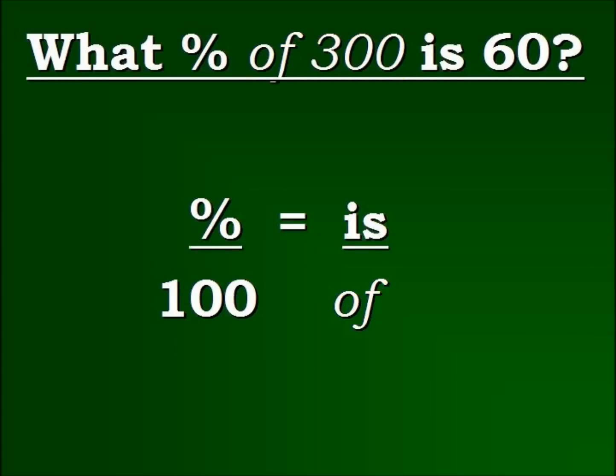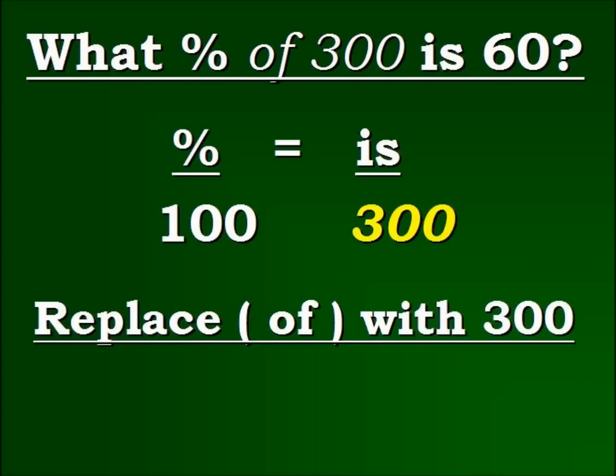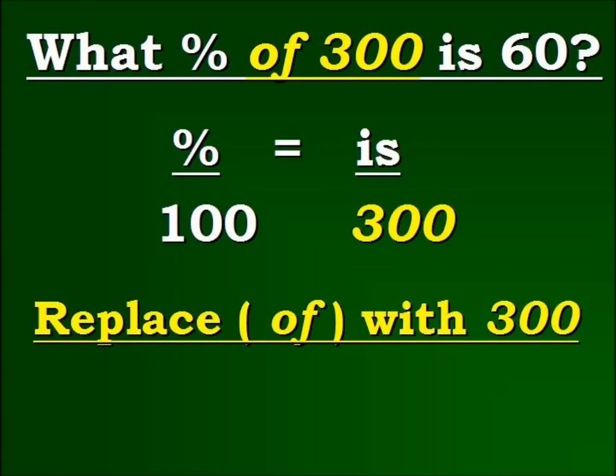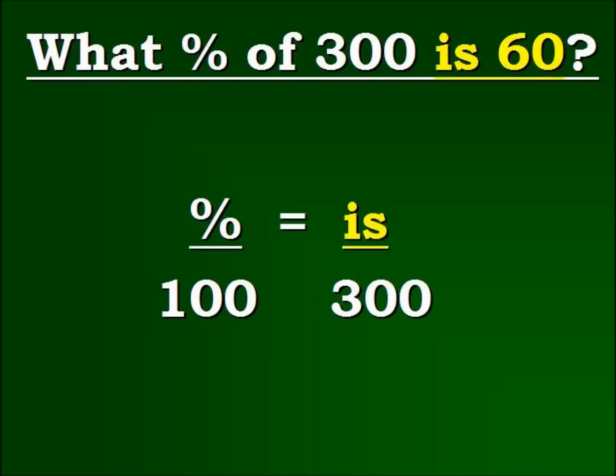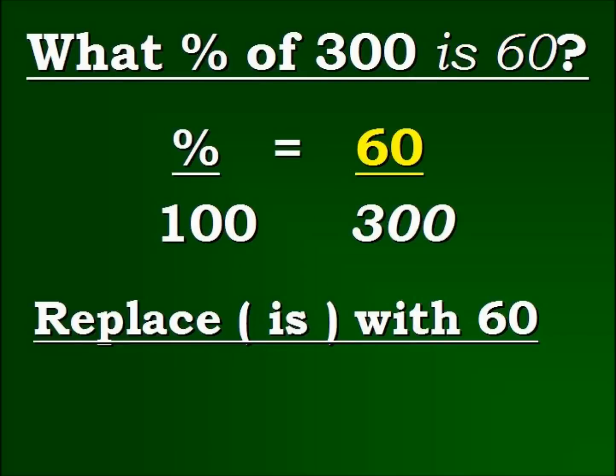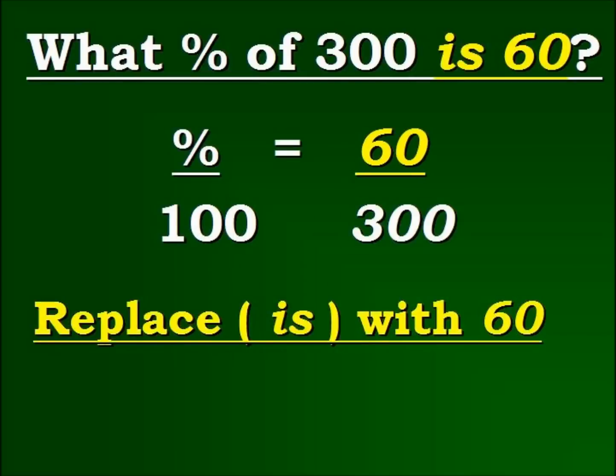Here we have of 300. We're going to replace of with 300. Next, we have is, and it's right next to the 60. So, we're going to replace is with 60 in our formula.